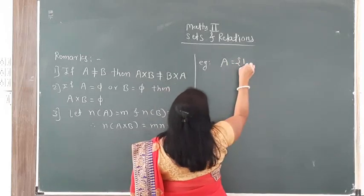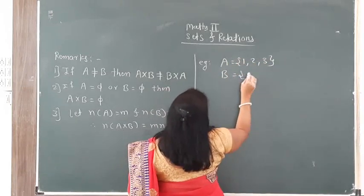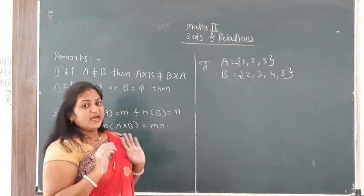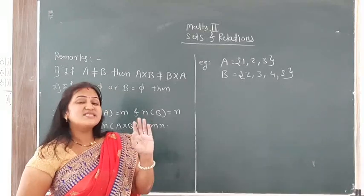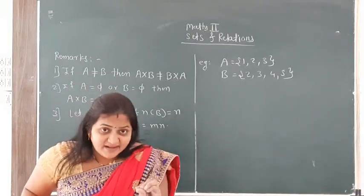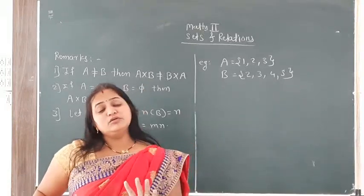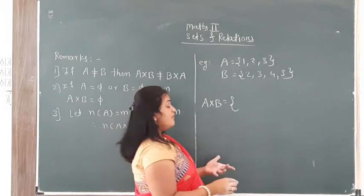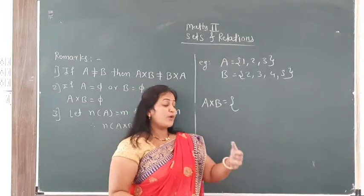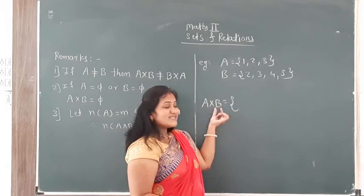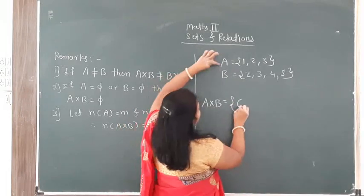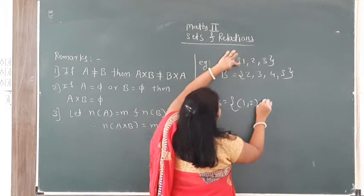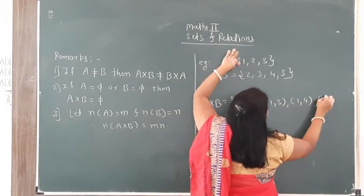Suppose A set contains {1, 2, 3} and B set contains {2, 3, 4, 5}. We want A cross B — all possible ordered pairs where A belongs to capital A set and B belongs to capital B set. Taking the first element 1 from A, we pair it with all elements of B: (1,2), (1,3), (1,4), (1,5). Then element 2: (2,2), (2,3), (2,4), (2,5). Then element 3: (3,2), (3,3), (3,4), (3,5).